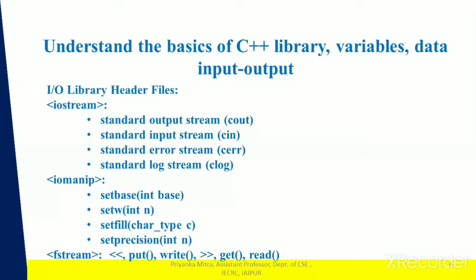Now let's look at the input-output library header files. The three important header files in C++ are: iostream, iomanip, and fstream. iostream defines the cin, cout, cerr, and clog objects, which correspond to the standard input stream, the standard output stream, the unbuffered standard error stream, and the buffered standard error stream respectively.